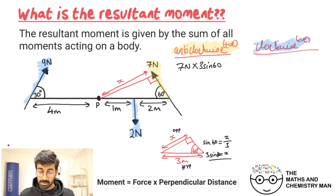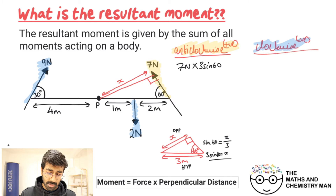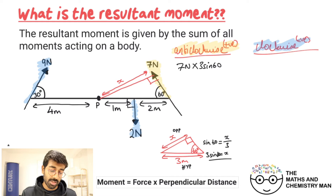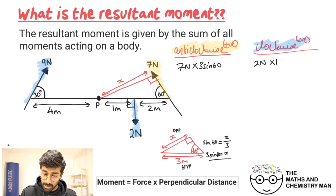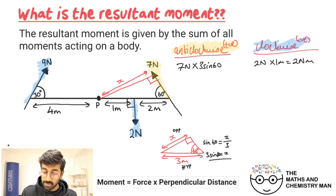For the clockwise direction, starting with the two Newtons — that force is already perpendicular, so it's easy: two Newtons multiplied by one meter gives two Newton meters.